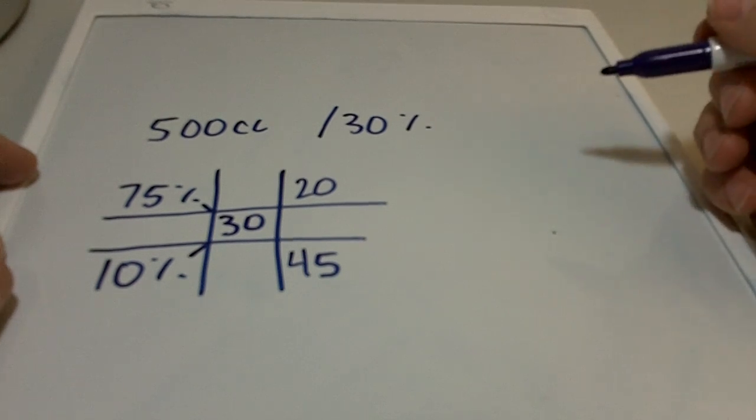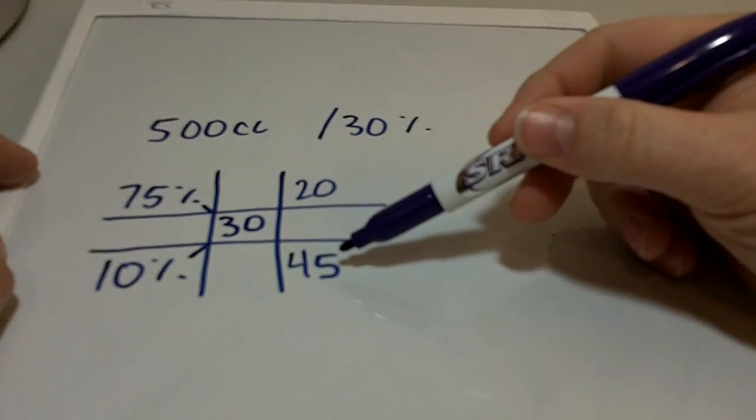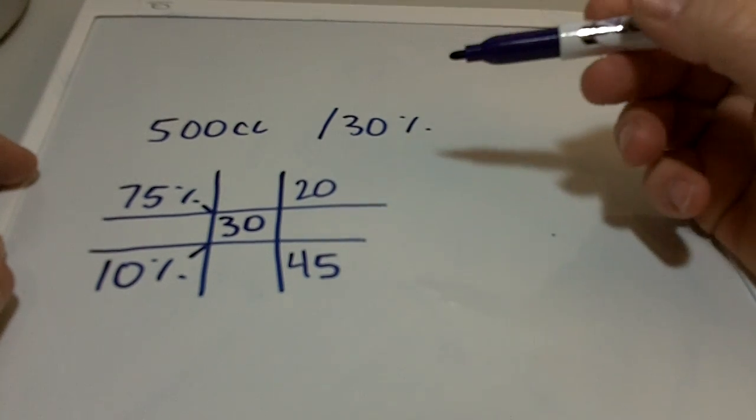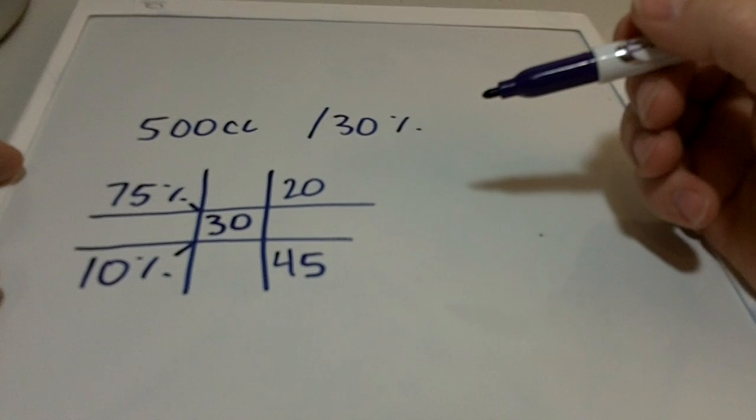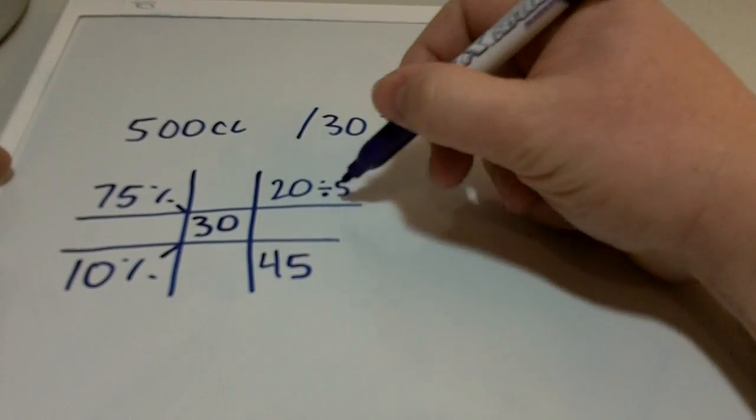At this point, what I see here is this ratio, 20 parts and 45 parts. I can take that down a little bit because they're both divisible by 5.